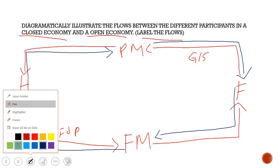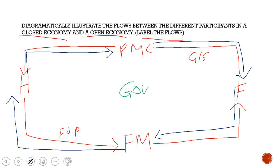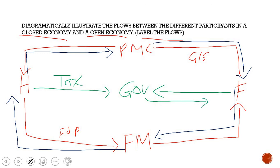If government were included, households and businesses pay tax to government, and in return government provides them with public goods and services. Government is both a producer and consumer — it purchases products from the product market and purchases factors of production from the factor market. If the financial sector were included, savings would flow from both households and firms to the financial sector.